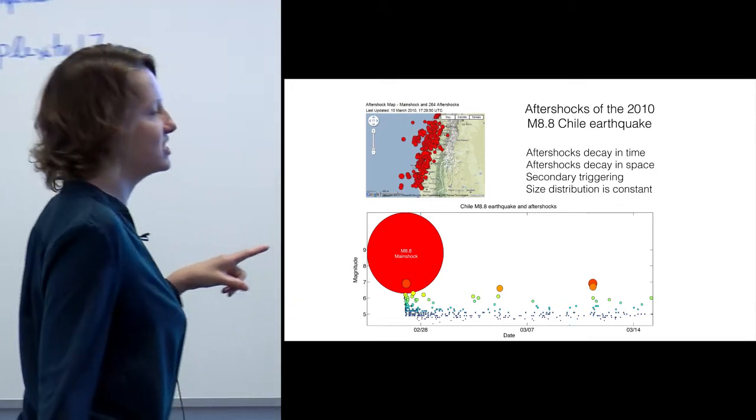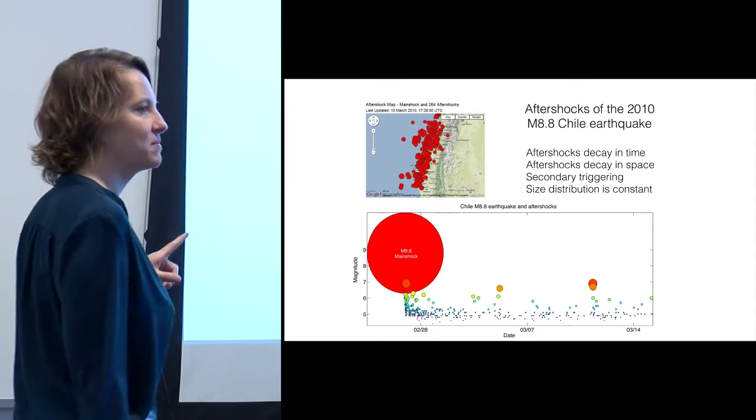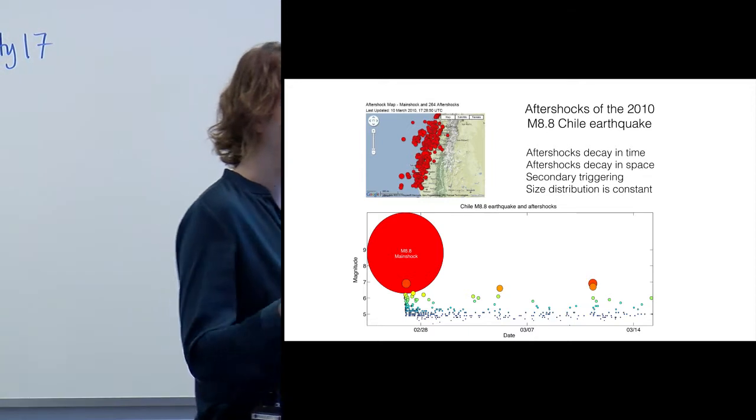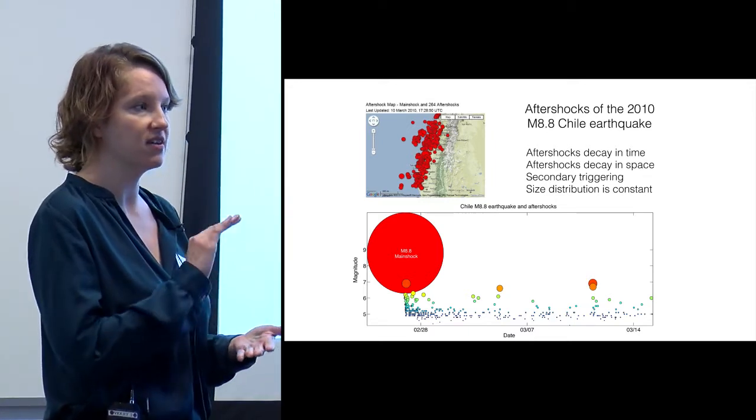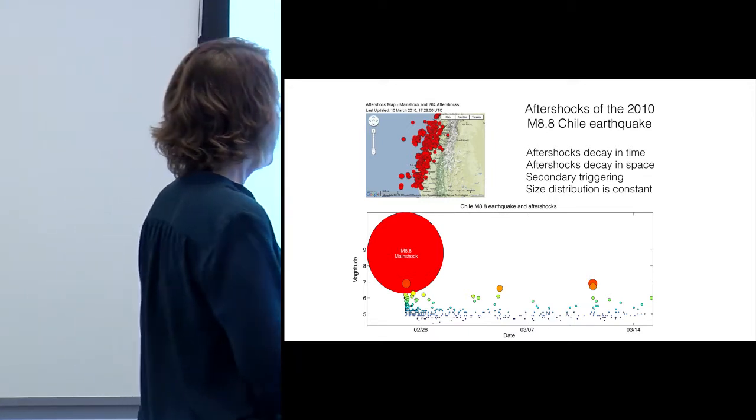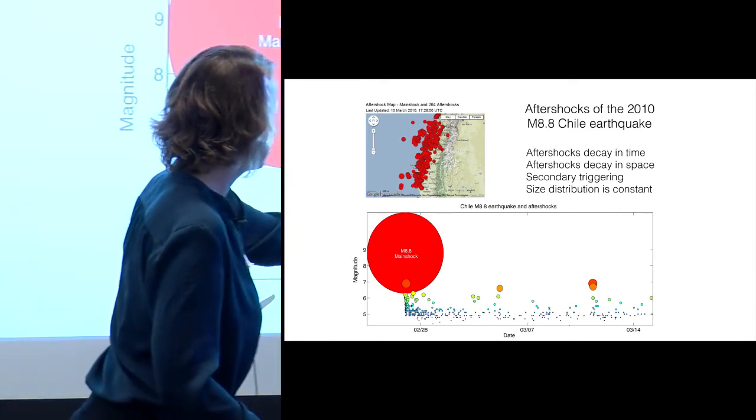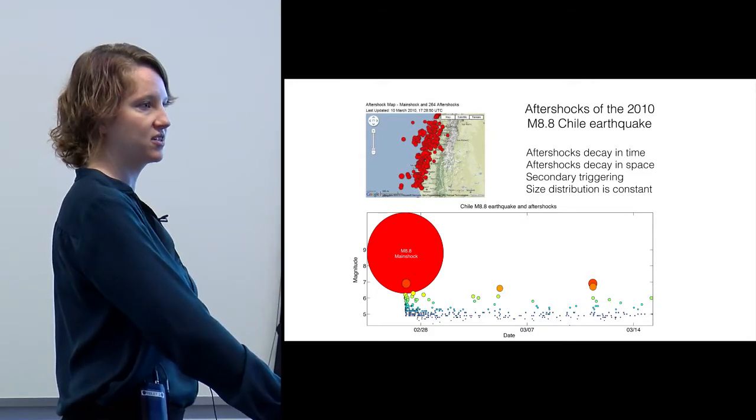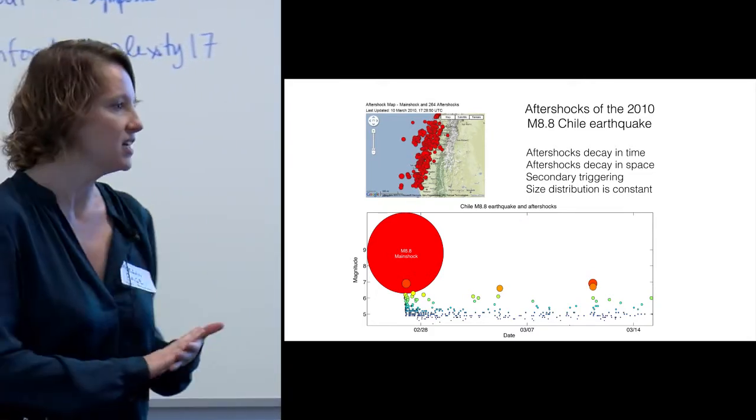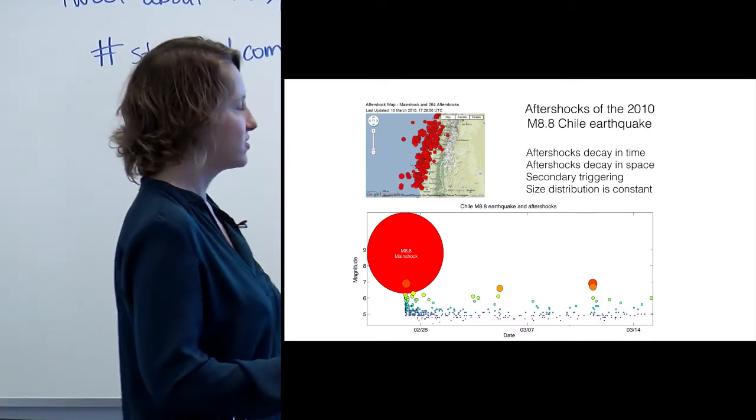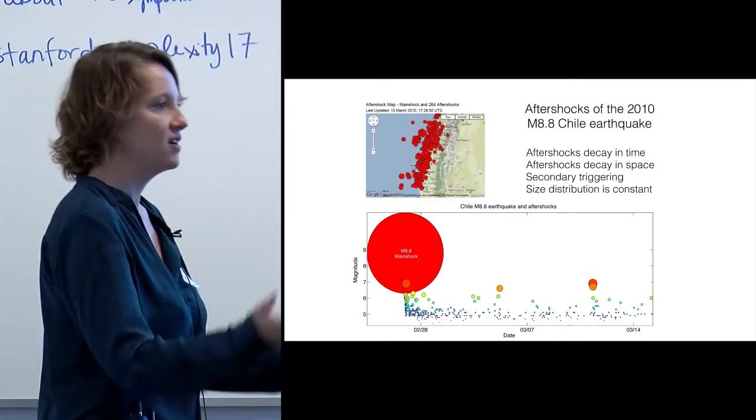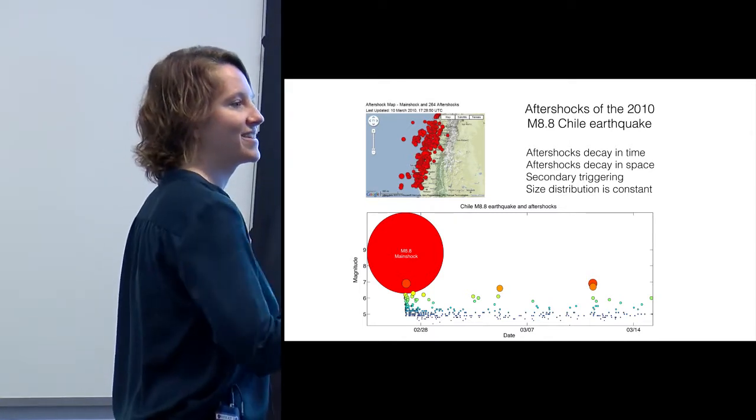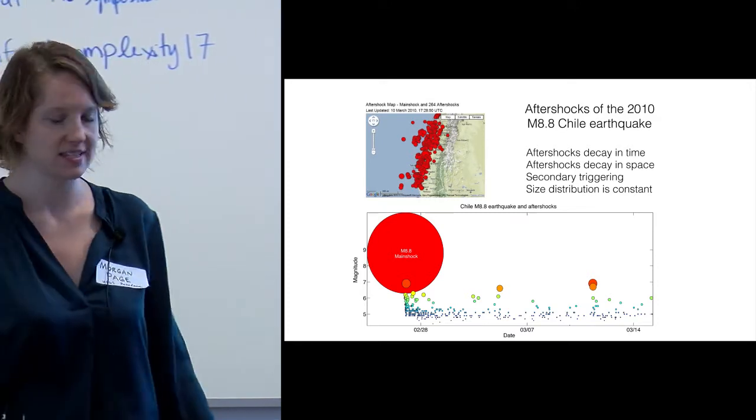Another thing is that the size distribution is constant. This is something a lot of people don't realize. People think that as you get further out in the aftershock sequences, the aftershocks get smaller. No, the aftershocks just get reduced in number, so the rate goes down. But any given one of those earthquakes that's triggered has the same probability of being big or large. They all follow that Gutenberg-Richter scaling relationship. As you get further out in the aftershock sequence, there are just fewer rolls of the dice. The probability of a big magnitude is the same.